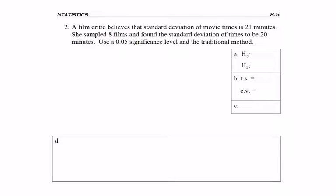As I read the question, I saw the phrase believe. So that tells me this is where the claim is coming in. The film critic believes that the standard deviation, so we'll be using sigma, is 21 minutes. So I have sigma equals 21 minutes for my claim and equal always goes with H0, the null hypothesis. My alternate hypothesis will be sigma not equal to 21, since we don't know if it's less than or greater than. It's just the opposite.